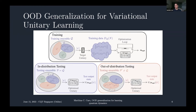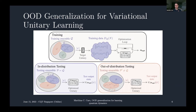There was a question about whether we're doing tomography on the states. There are multiple settings possible: you could get classical descriptions of these quantum states, or copies of the states. The costs we look at are overlaps between output states, which can be evaluated on a quantum computer using swap tests or something similar — so it works even with only copies and no classical descriptions.